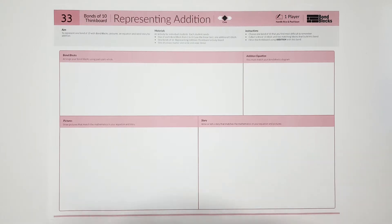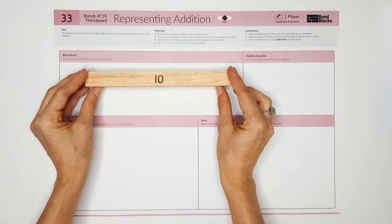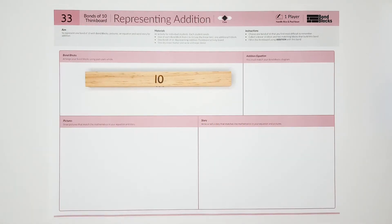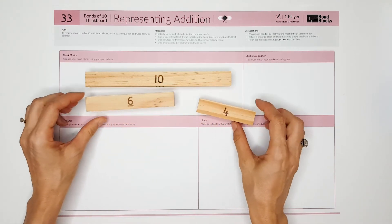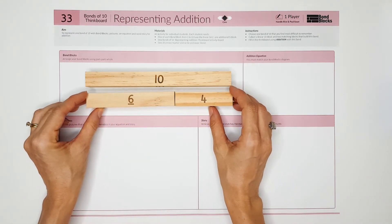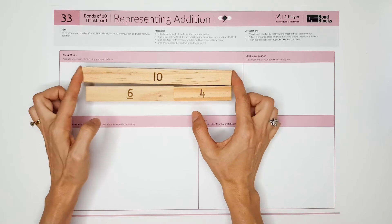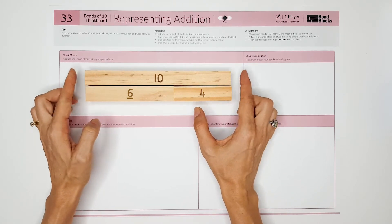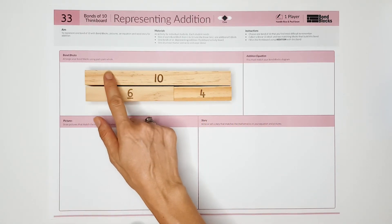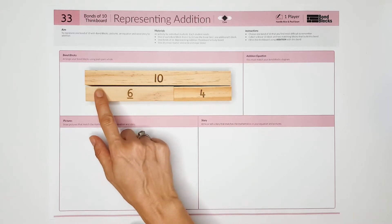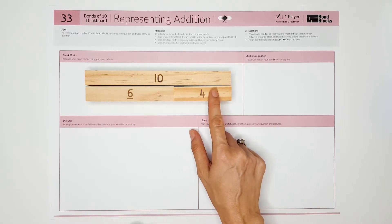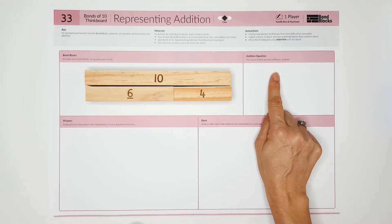You will need to select one two-part bond of 10. I'm going to use the bond of 6 and 4 to equal 10. When you place your blocks, remember to place the whole on the top and the two parts that join together underneath. When we represent the addition equation,